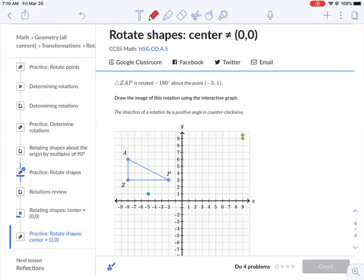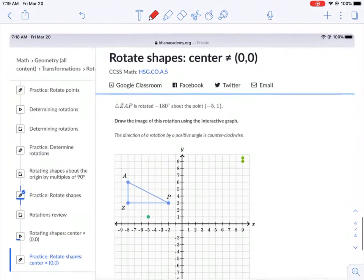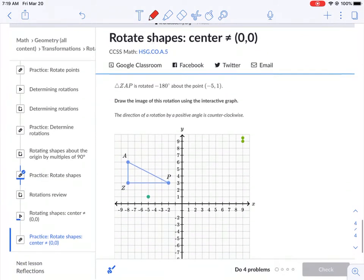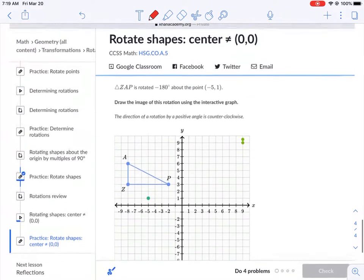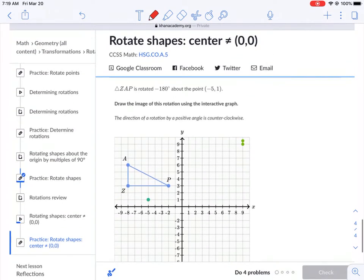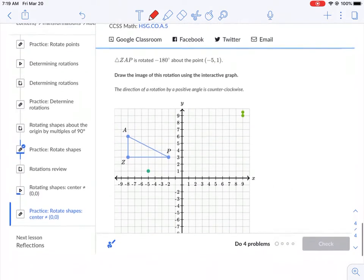Welcome back everyone. Today we're going to talk about a Khan Academy assignment called rotate shapes where the center is not equal to the origin zero zero.